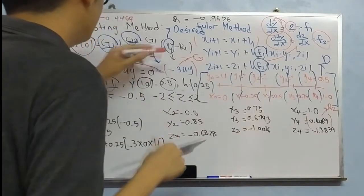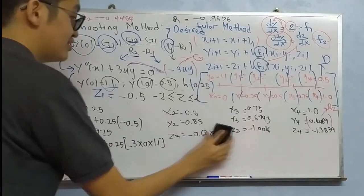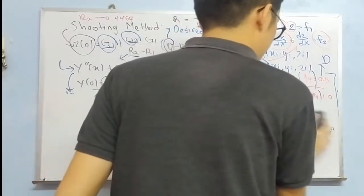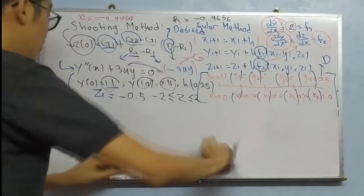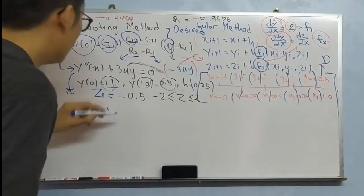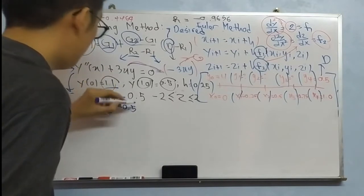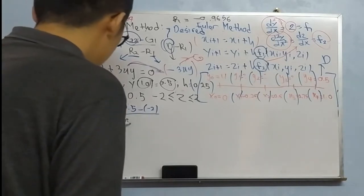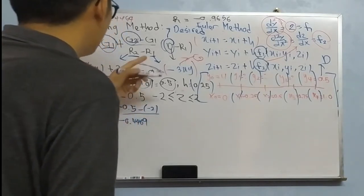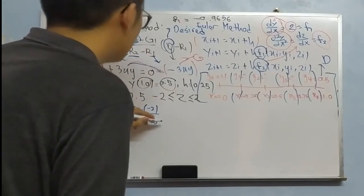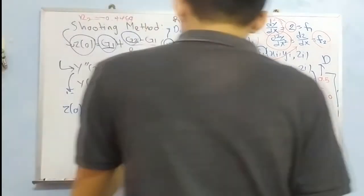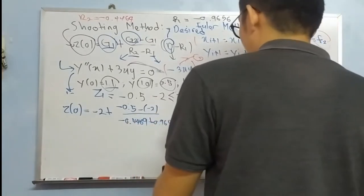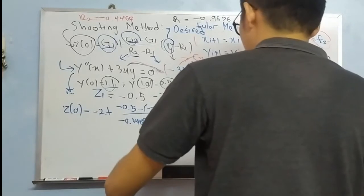Okay, now we have all these values, so now we erase it and substitute all the required values into the general formula. Let's apply the general formula: Z equals D minus R1 plus G2 second guess minus first guess divided by R2 minus R1, minus minus plus.